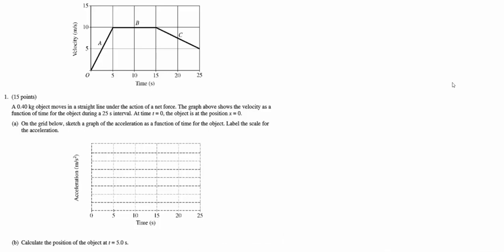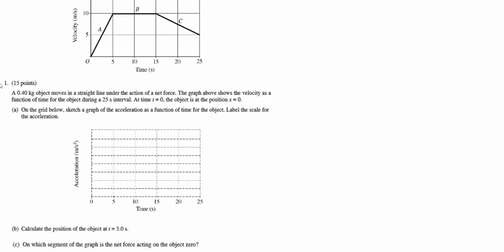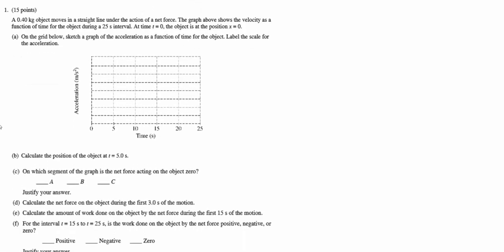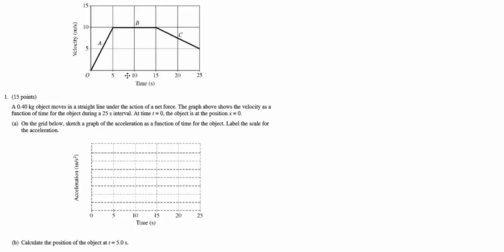This is problem number one from the 2011 AP Physics B exam. We're dealing with mechanics, more specifically motion, and later on a hint of dynamics and energy. We have a velocity-time graph given with three clear segments A, B, and C. We're talking about a 0.4 kg object moving in a straight line, so just one-dimensional motion under the action of a net force. We have this 25-second interval plotted, and at time equals zero, the object began at the initial position. For part A, we want to sketch the acceleration-time graph for this object.